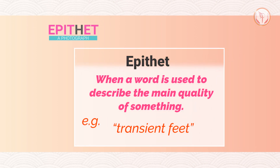The next and last poetic device used in this poem is epithet — when a word is used to describe the main quality of something. For example, 'transient feet': here the word 'transient' is used to describe the feet, where feet represent humans, and transient describes the temporary quality of human existence — meaning that humans are temporary and cannot live forever.